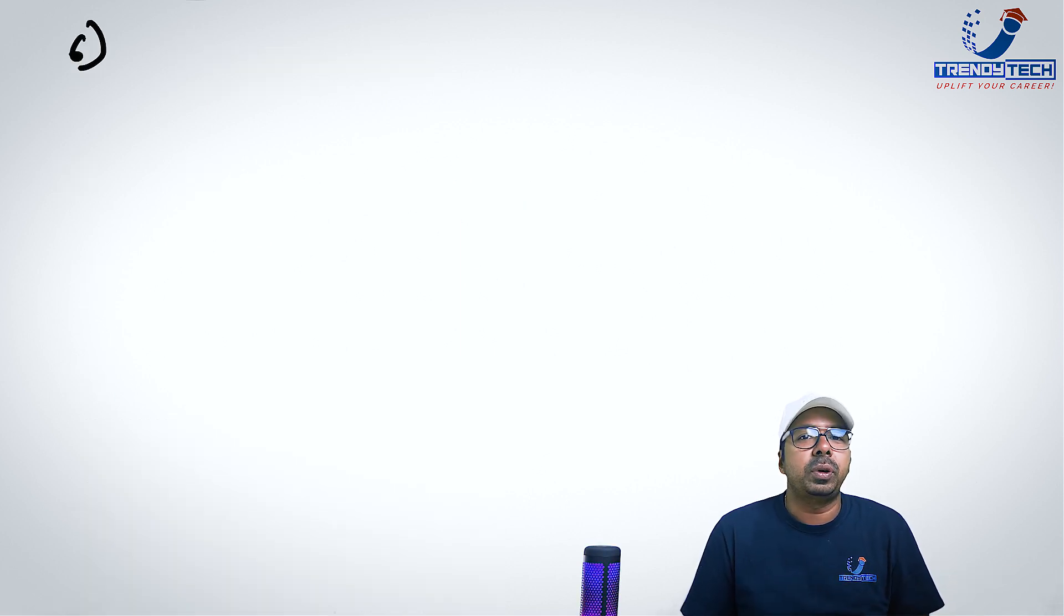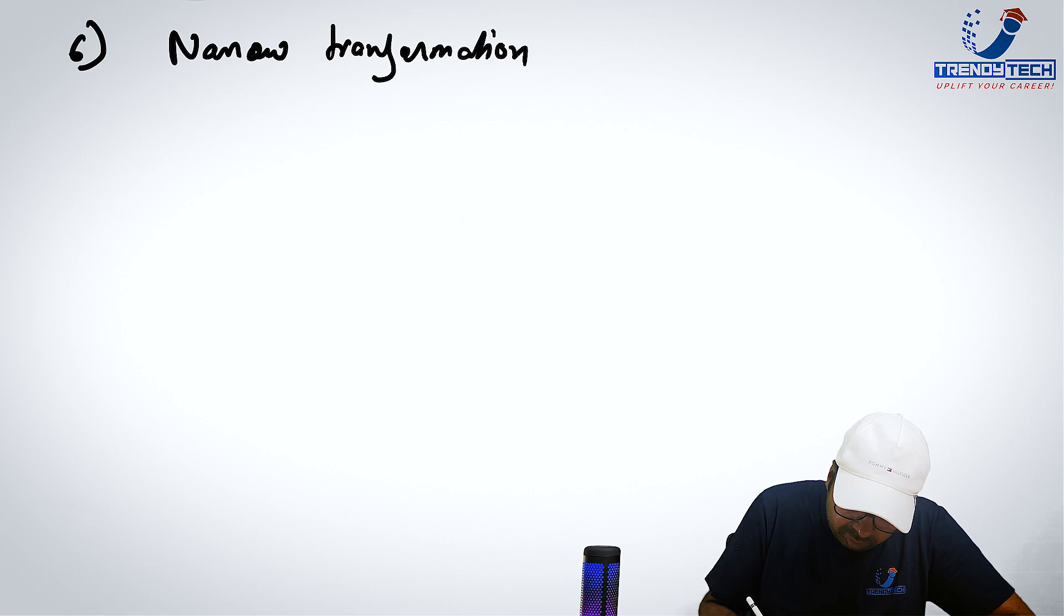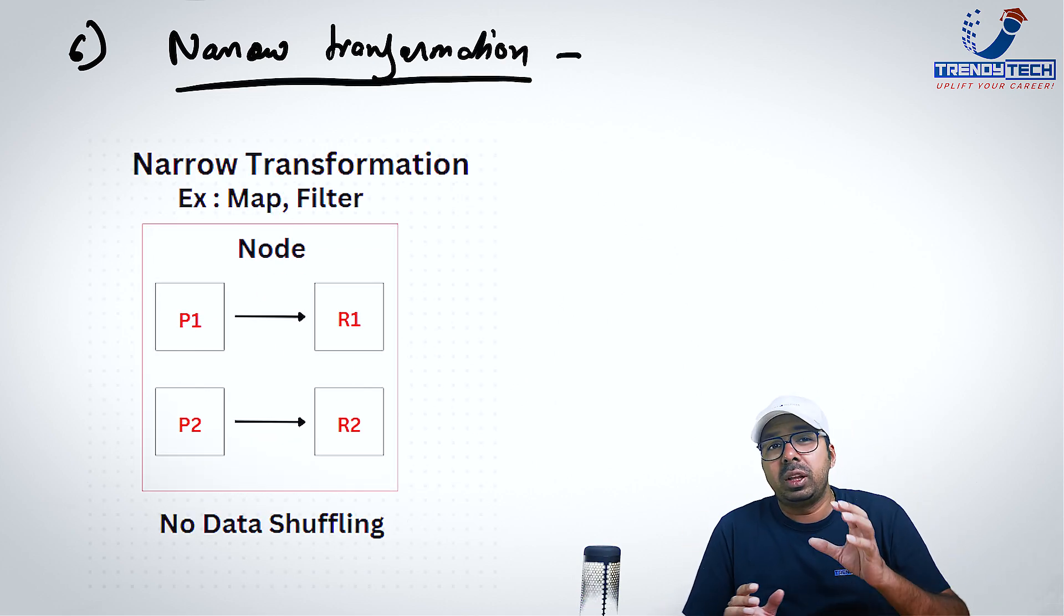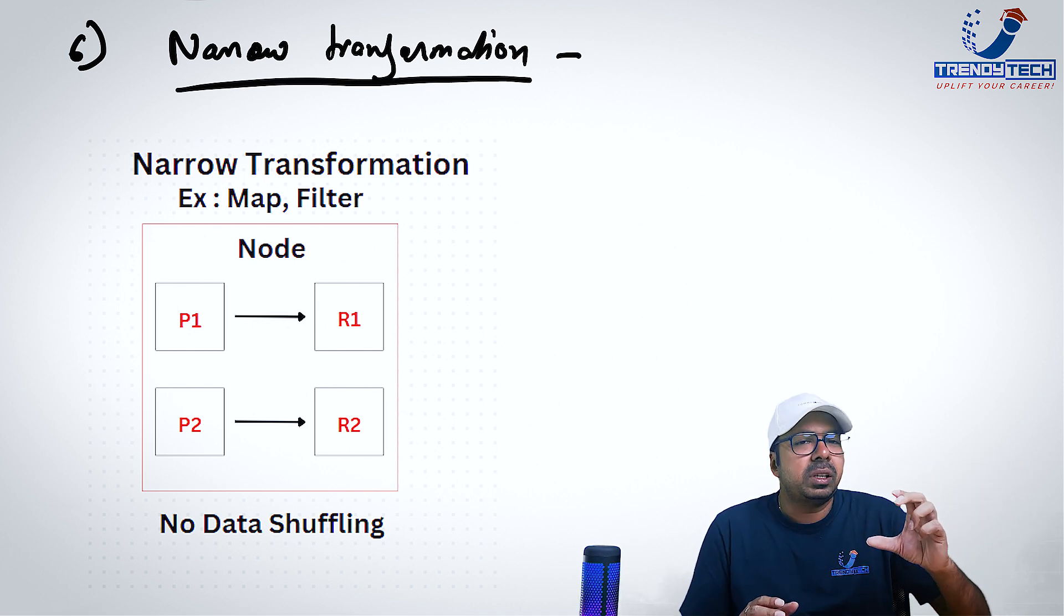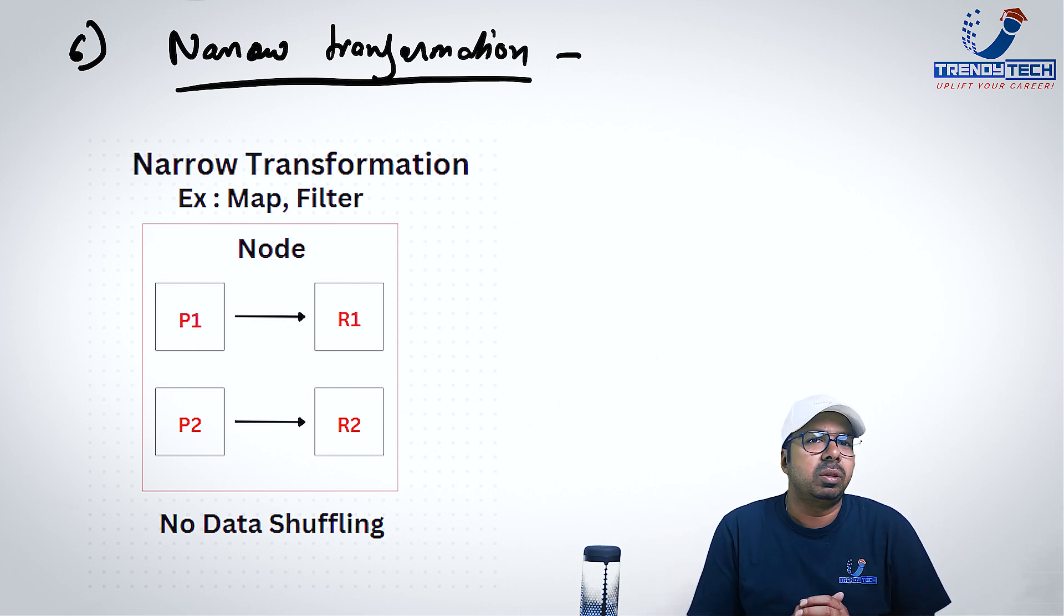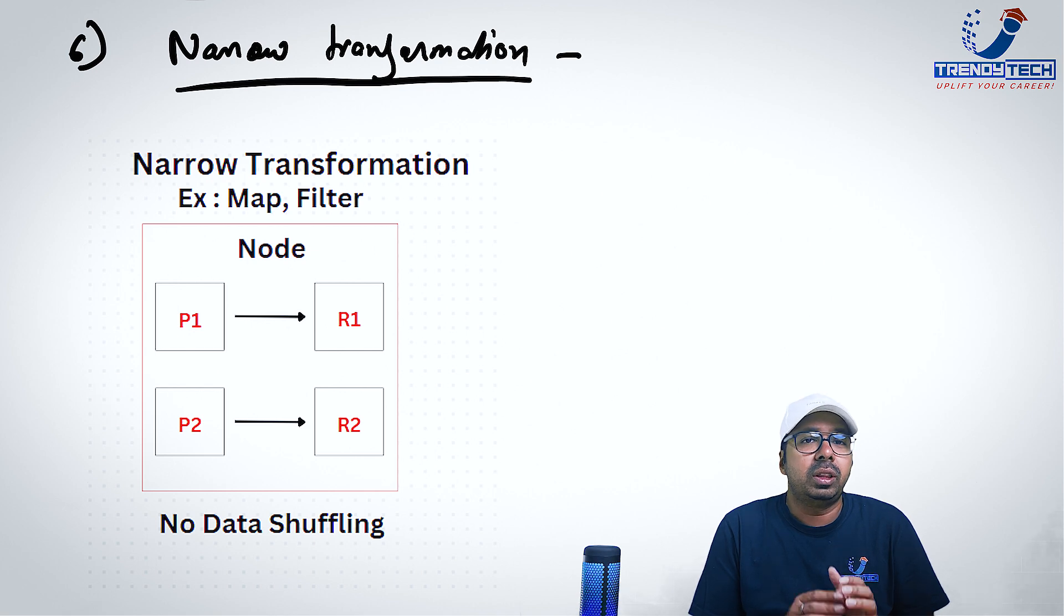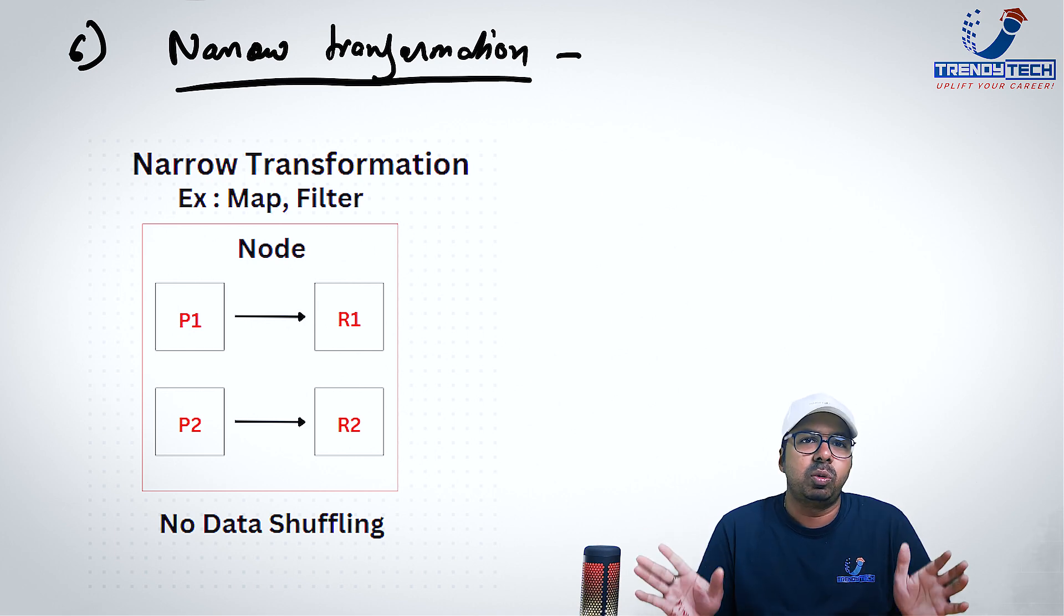We have understood what is a transformation. So what is a narrow transformation? A narrow transformation... It's quite straightforward. Narrow transformations are the ones where there is no shuffling involved. For example, a filter. In filter, if one machine is doing filtering of data, is it dependent on any other machine? No. It can happen in isolation. So that's where there is no shuffling of data involved. So that is what a narrow transformation is. For example, a filter, a map and so on.